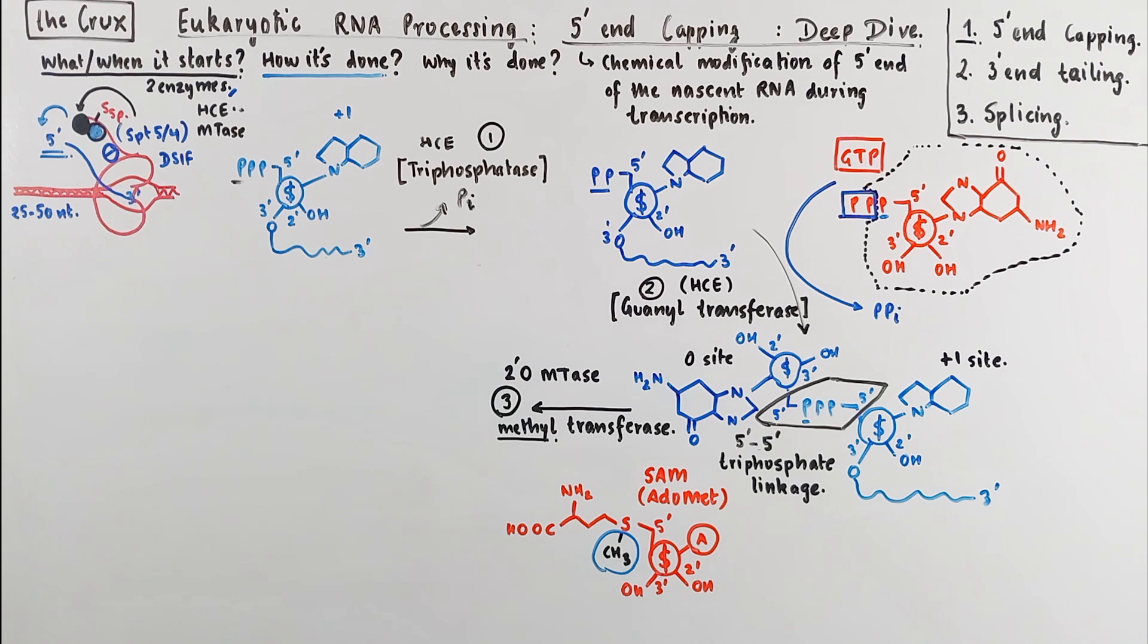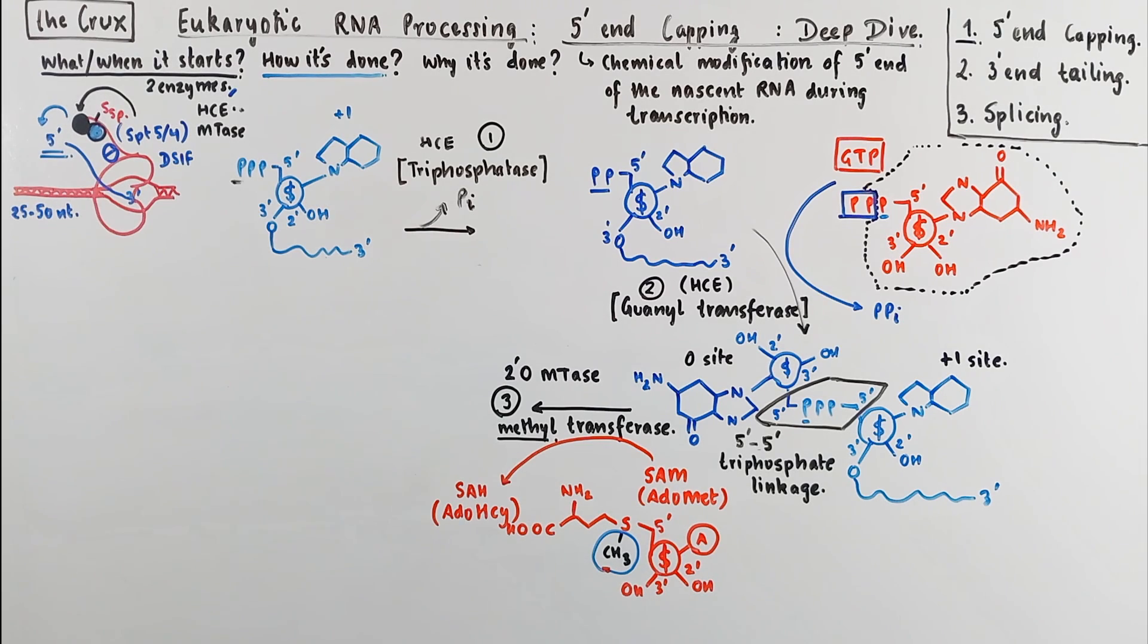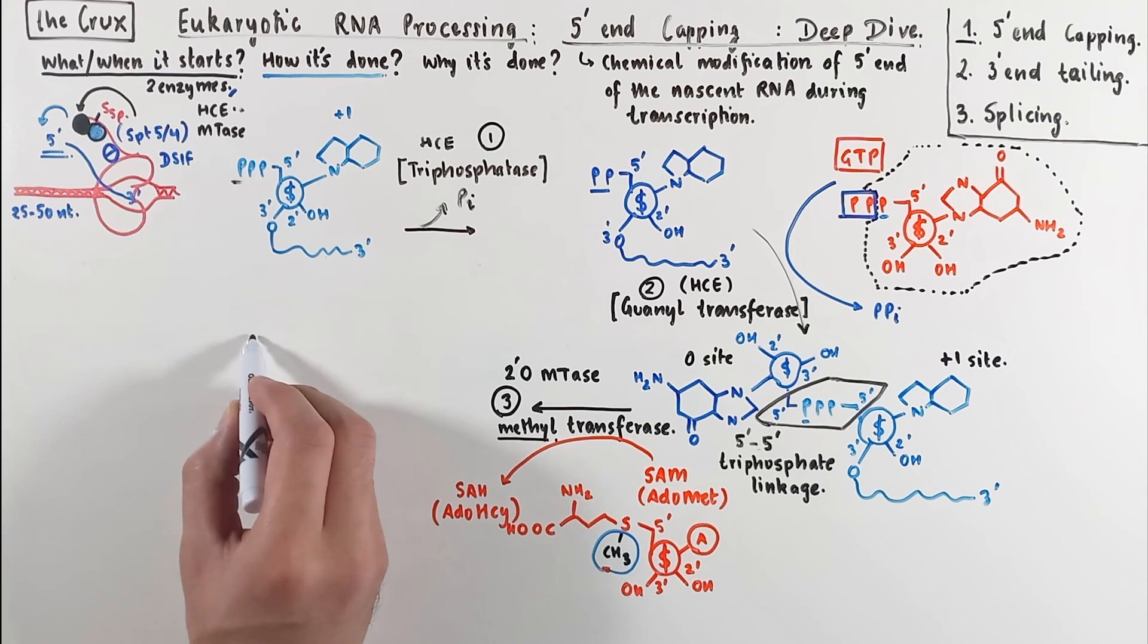Now Edomet goes into this reaction as a substrate. The methyl group is removed from the Edomet, and it turns into S-Adenosyl-L-Homocysteine, which is abbreviated as SAH or Edo-Hsi. Okay, so that is all about the substrate. And now let's draw out the product of this step.